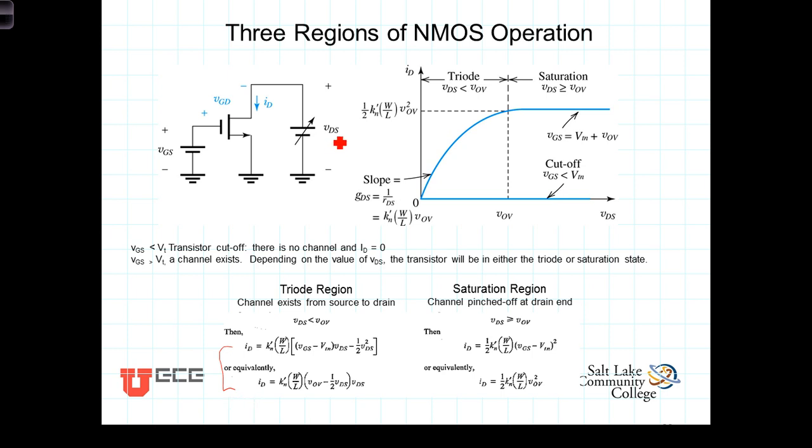As VDS continues to increase to the point that it equals or is greater than the overdrive voltage, the channel then pinches off at the drain end and the transistor is said to be in the saturation region.